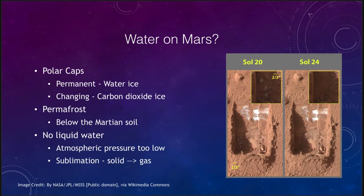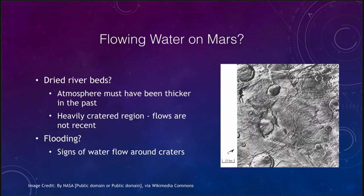Is there flowing water on Mars, or has there been? We do see some evidence of that. We see evidence of things like dried river beds, and you can see areas that look like various tributaries and channels that have been present on Mars, indicating that water flowed in the past. We know that was a long time ago just by looking at the number of craters around those features.